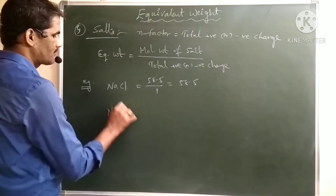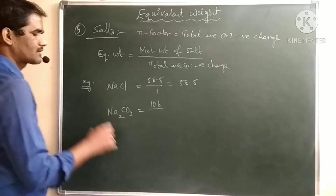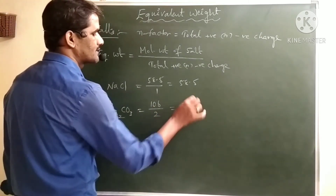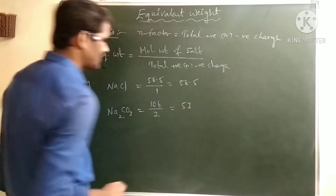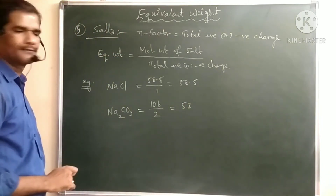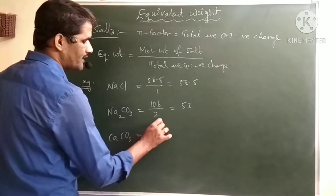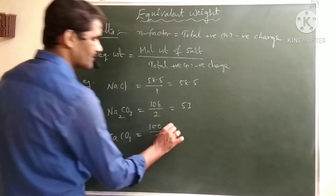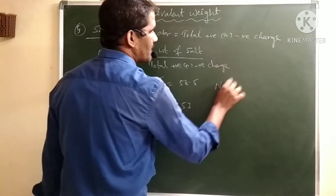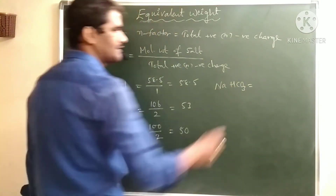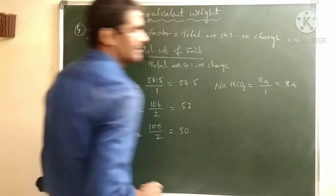For sodium carbonate, molecular mass is 106 and n-factor is 2, giving equivalent weight 53. For calcium carbonate, molar mass is 100 divided by 2, giving equivalent weight 50. For sodium bicarbonate, molar mass is 84 and n-factor is 1, so equivalent weight is 84.